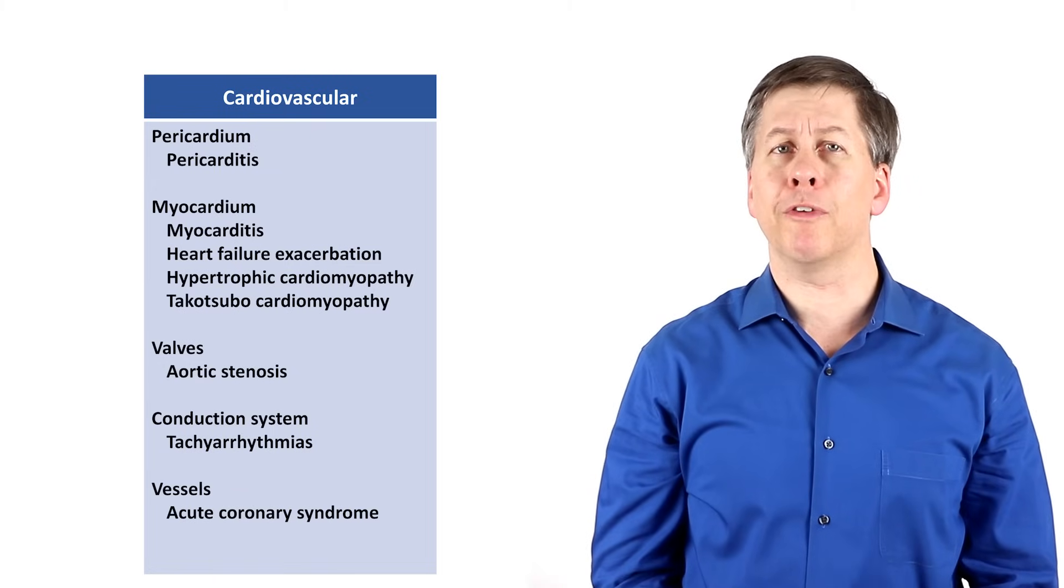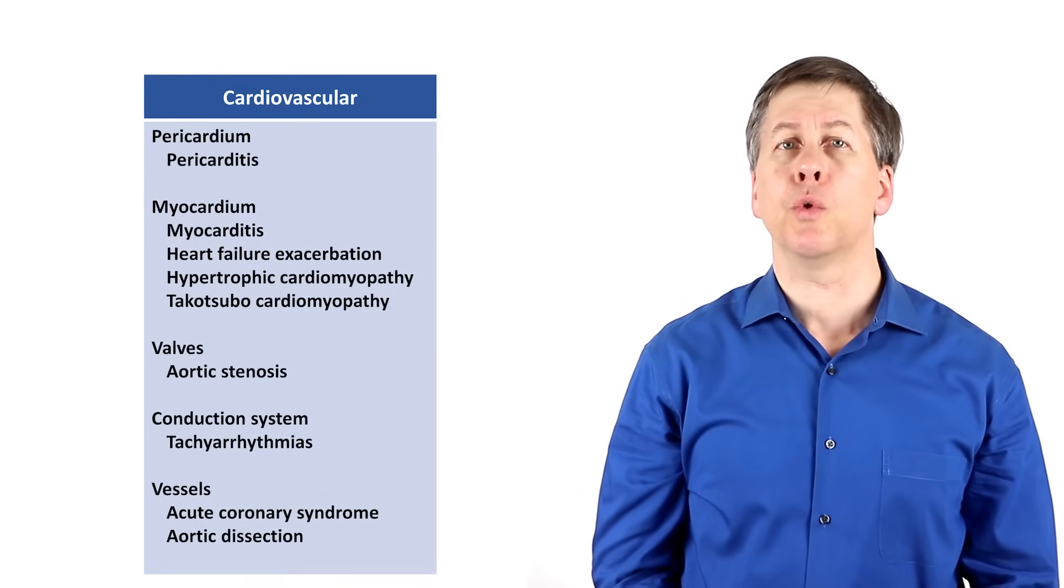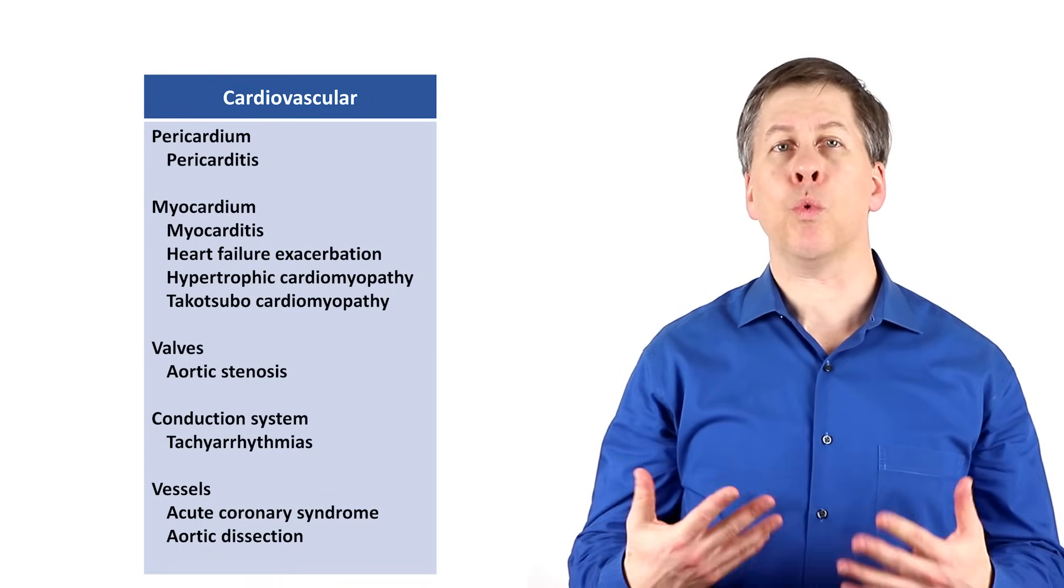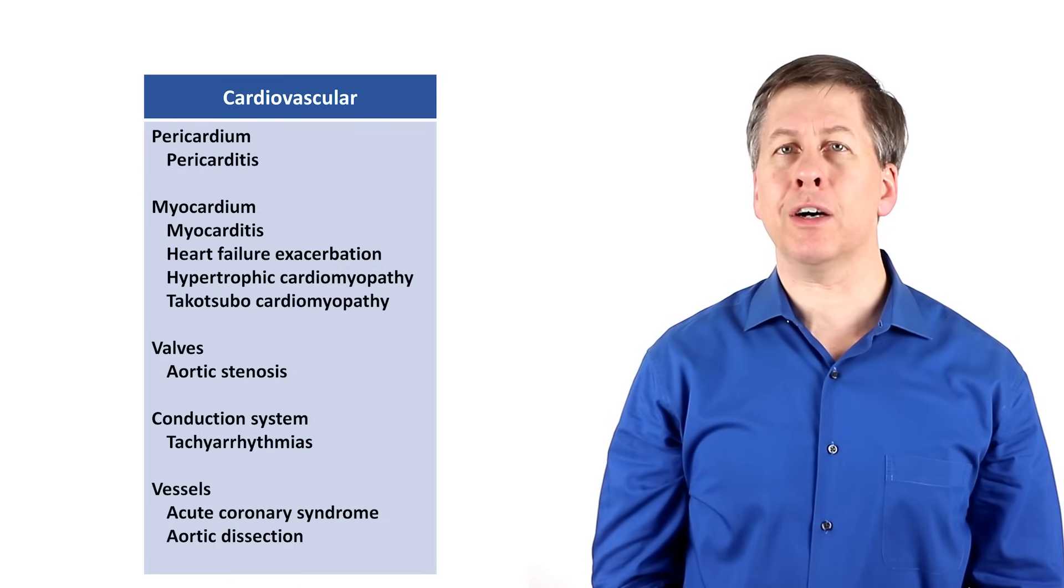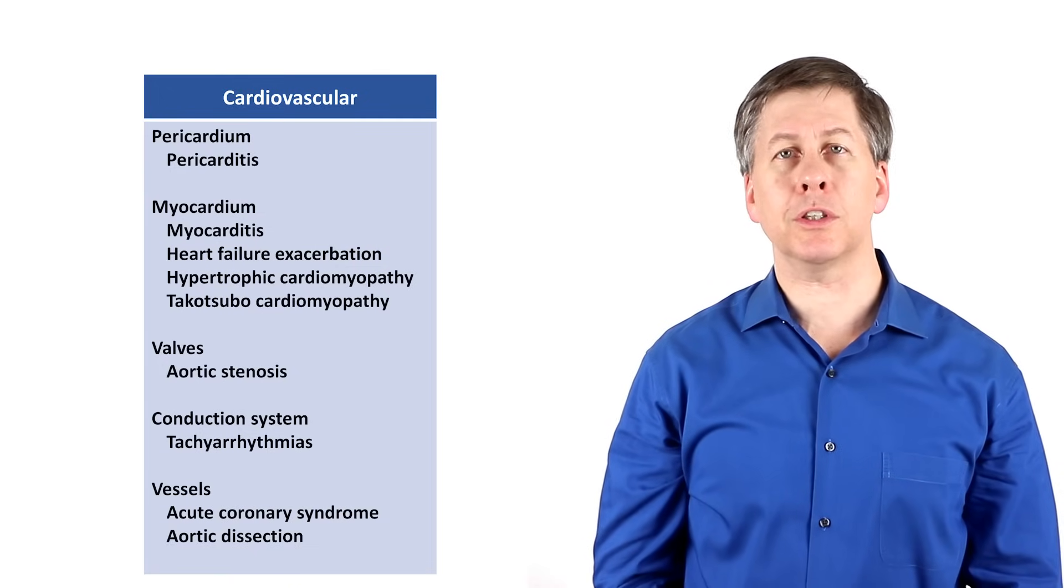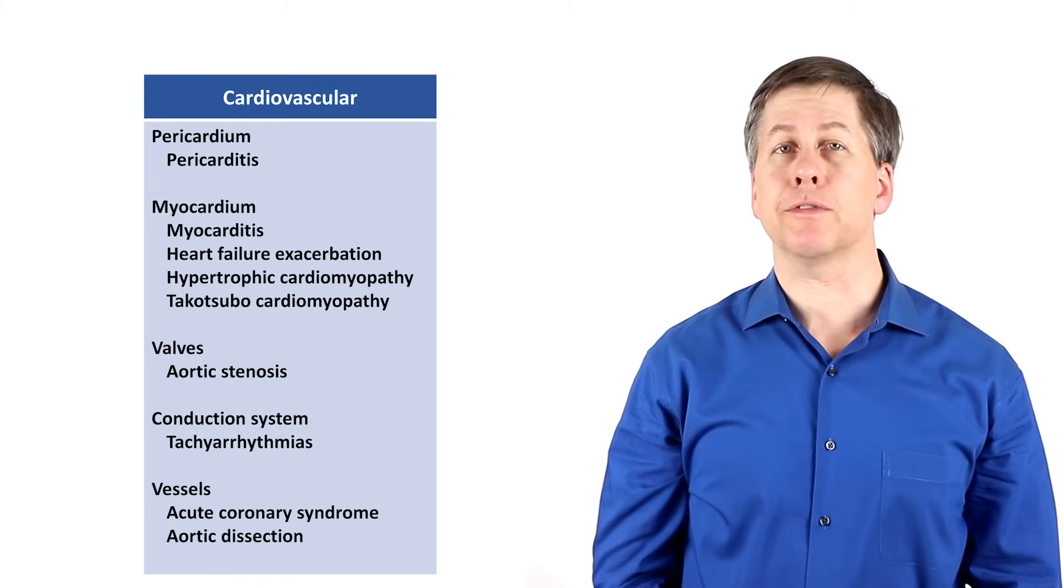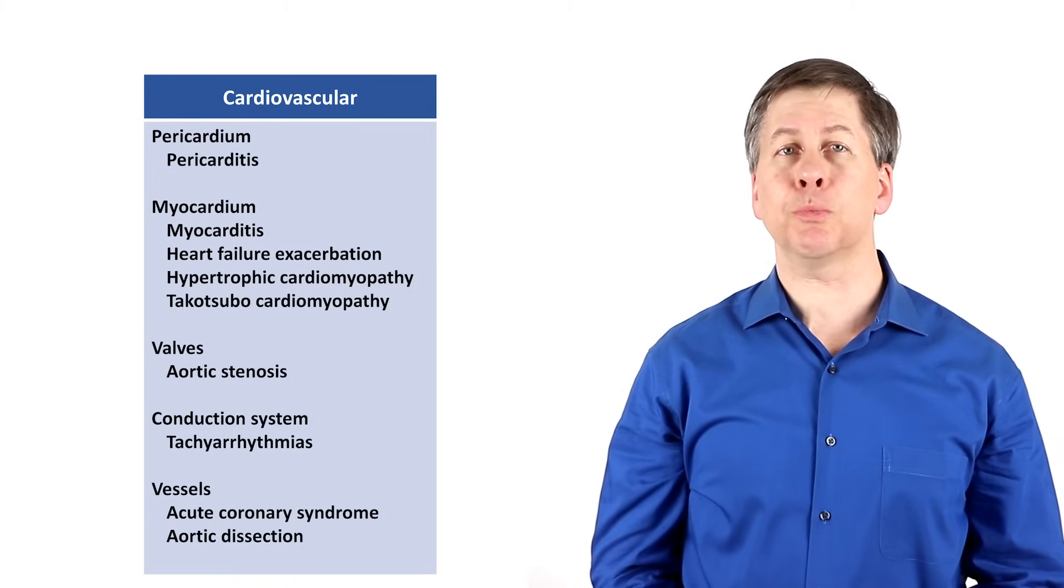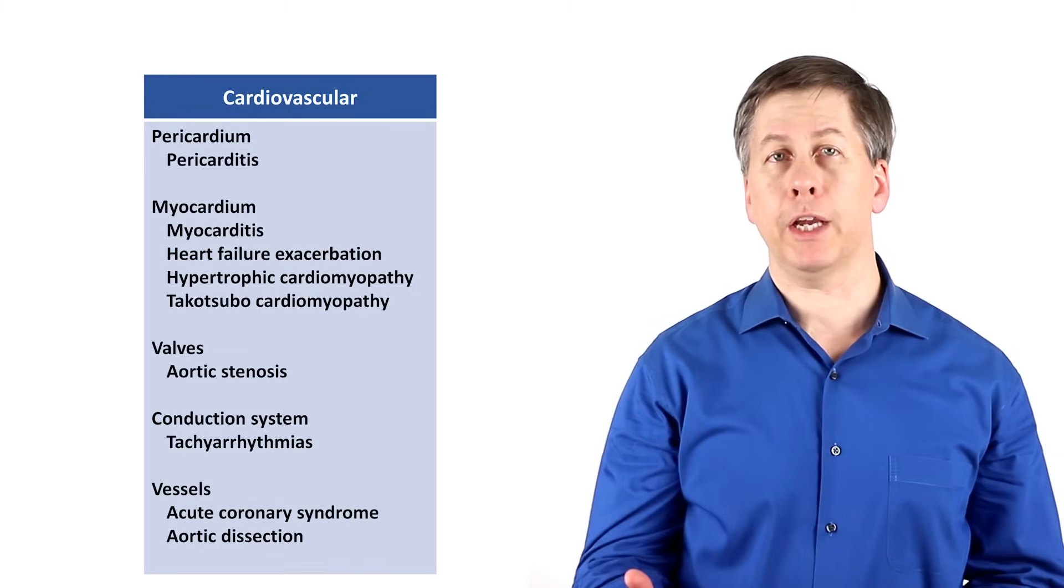An uncommon but very life-threatening etiology in this subcategory is aortic dissection, which is when the layers in the aortic wall start separating. When the dissection involves the aortic valve, it can lead to acute aortic insufficiency. If it spreads to a carotid artery, it can lead to a massive stroke. And the dissection can also weaken the wall to the point of rupture and very rapid exsanguination.